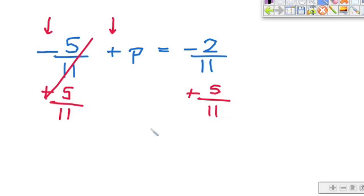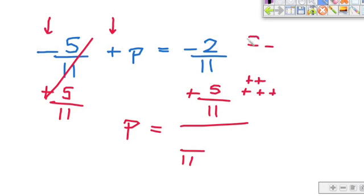These cancel. p falls down. My denominators are the same. That's awesome. So they stay the same, and I have negative 2 plus 5. That's like two negatives and five positives. Circle them out. What am I left with? I'm left with three positives. So my final answer is going to be p equals 3 over 11.